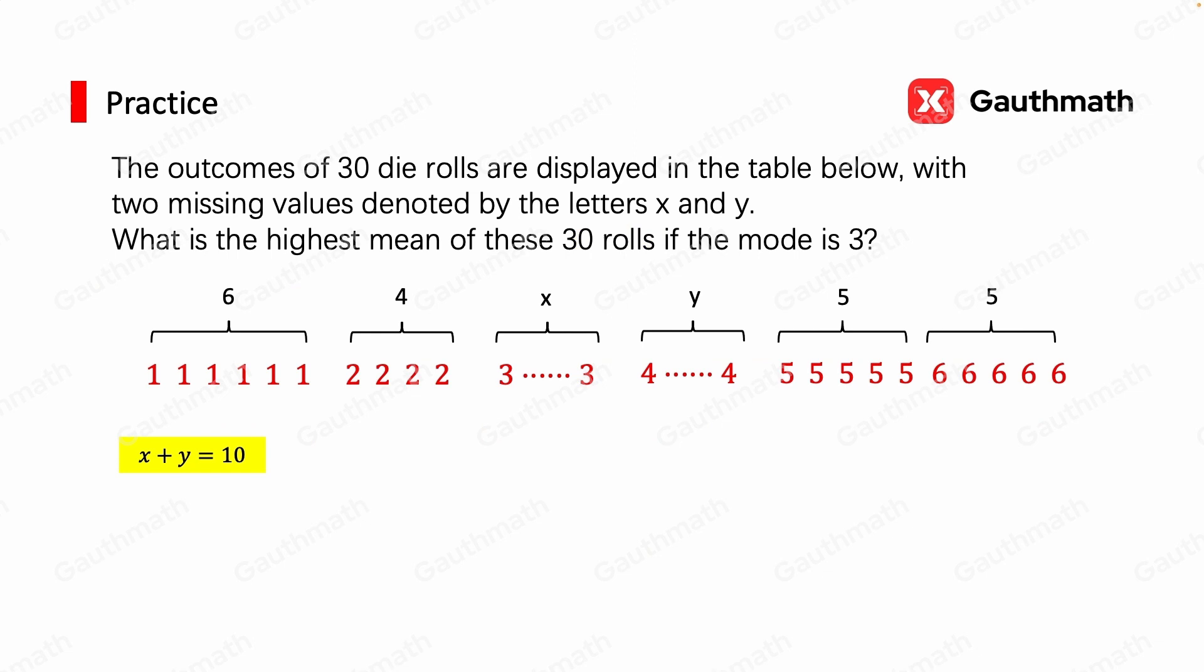And we're also given that the mode is 3. So x has to be greater than 6, otherwise 1 would be the mode, because 1 appeared 6 times.